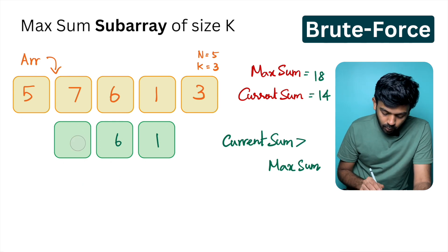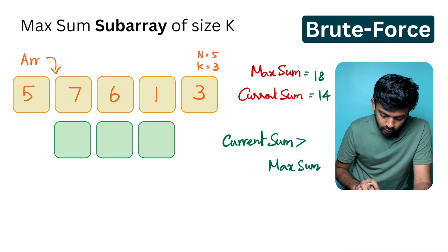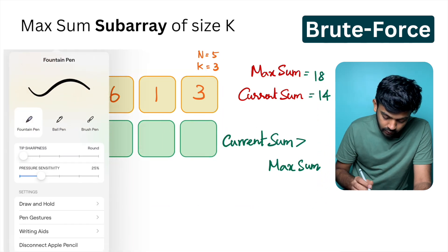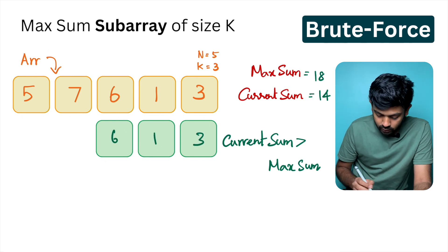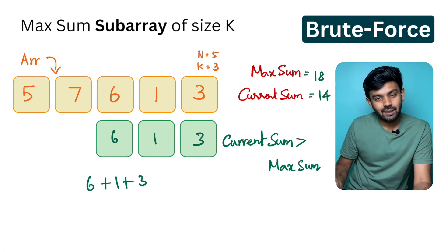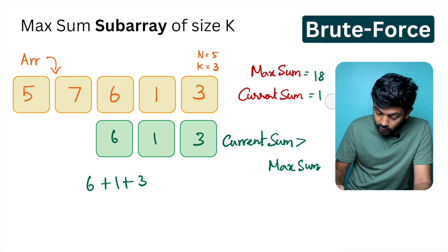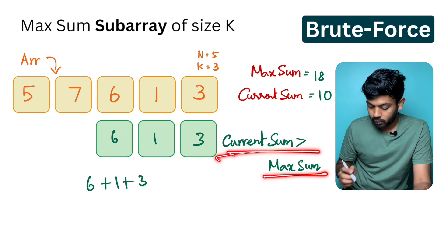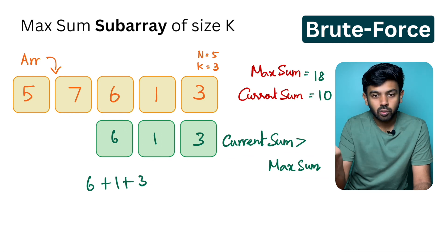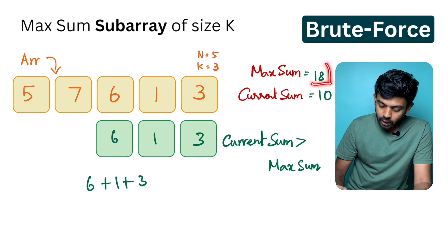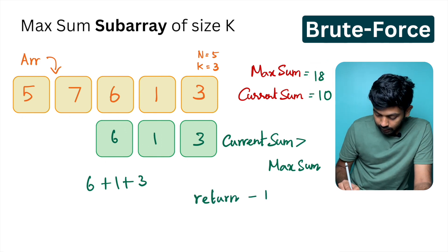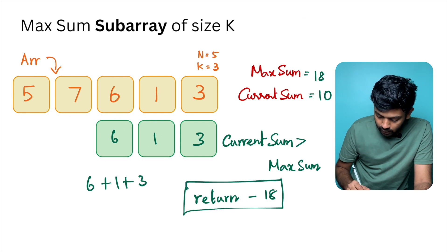Now we add the next possible subarray: 6, 1, and 3. 6 plus 1 is 7, 7 plus 3 is 10. Current sum becomes 10. Again we check: current sum is 10, max sum is 18 — not greater. So max sum remains 18. We return 18. 18 is the maximum value. This is the brute force approach.